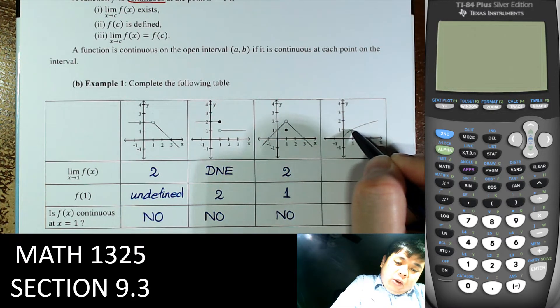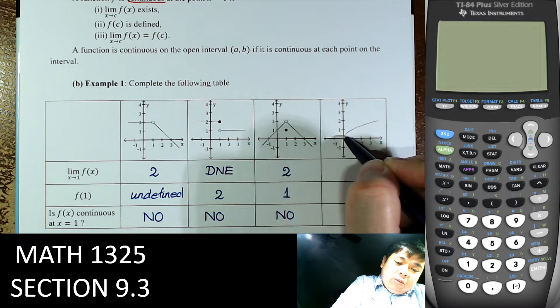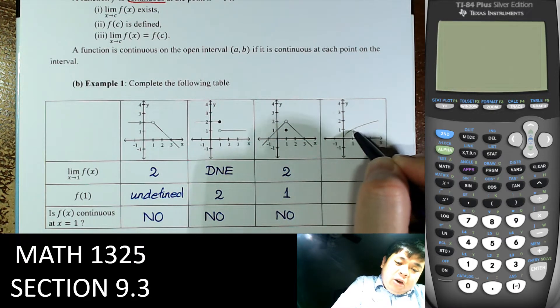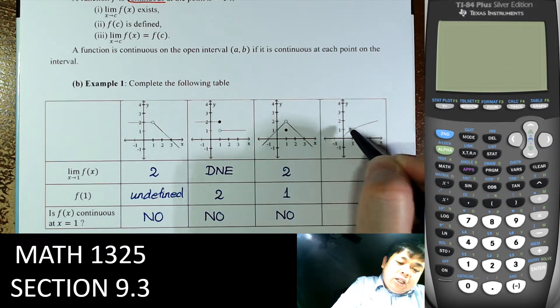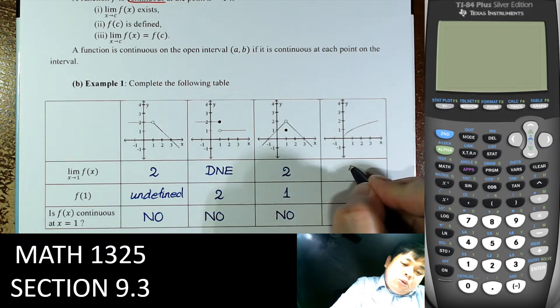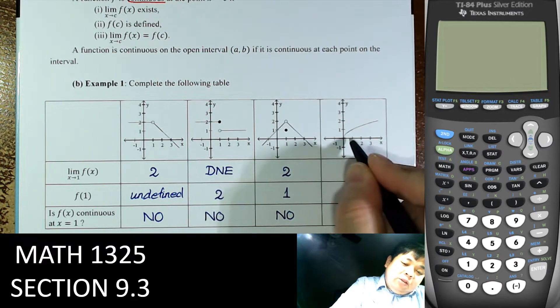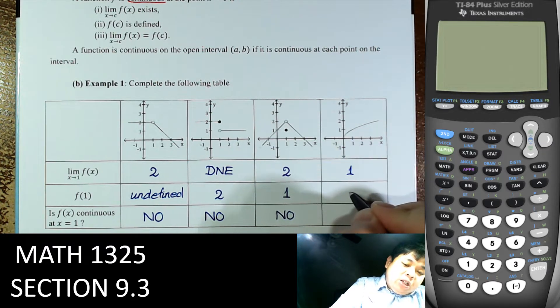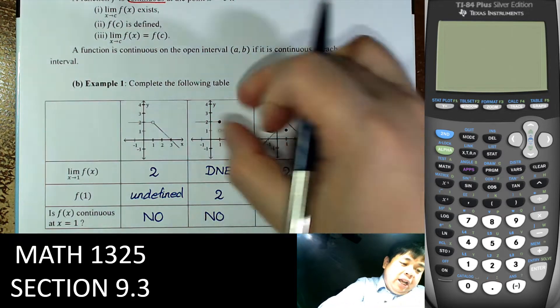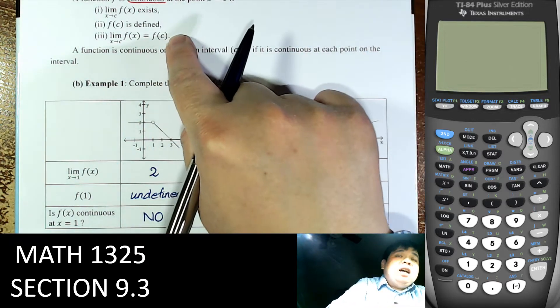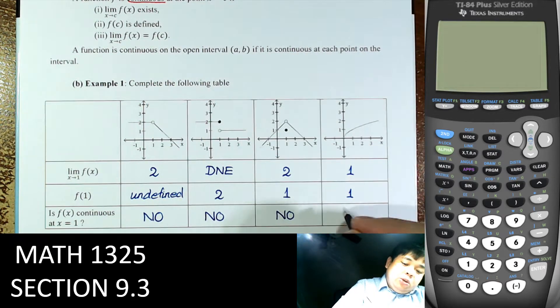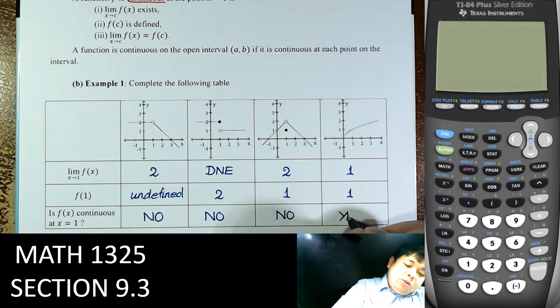Next one: when x = 1 from the left side and from the right side, it approaches that point. The limit equals 1. The value of the function is also equal to 1, and they are equal — so in this case, it is continuous.